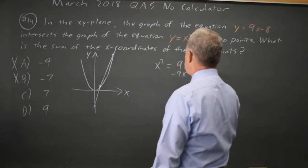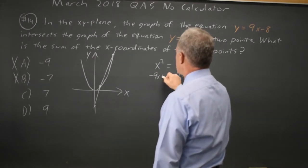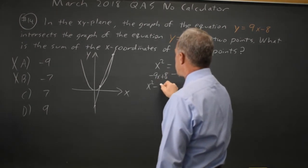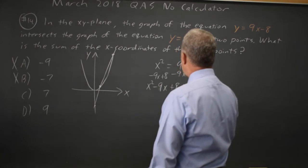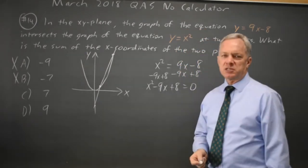Subtracting 9x and adding 8 to both sides, I get x squared minus 9x plus 8 equals 0. So I moved everything to one side of the equation.